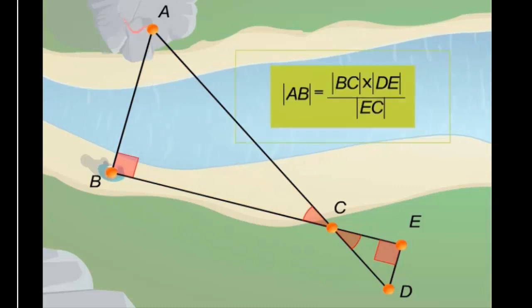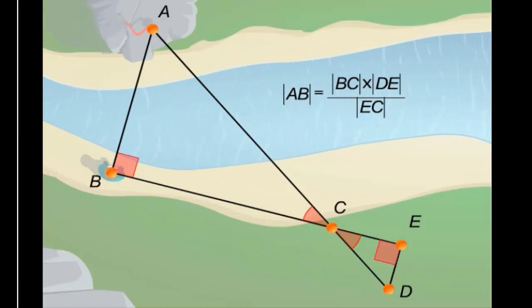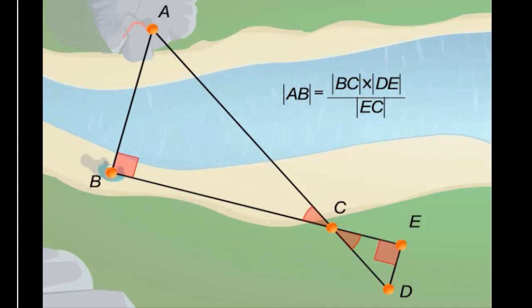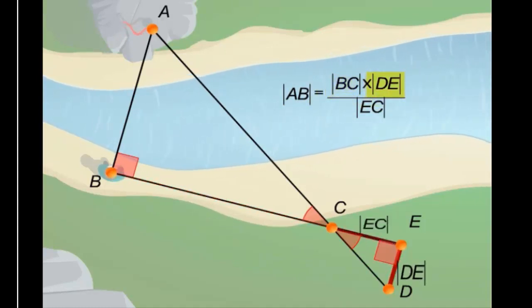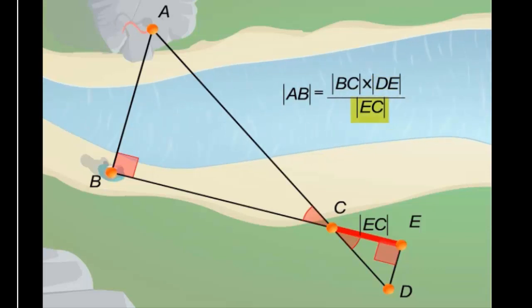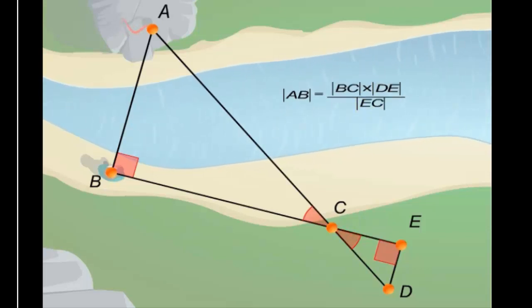Таким образом, AB равен BC, умноженное на DE, делённое на EC. Так как несложно измерить расстояние BC, DE и EC, вычислить расстояние через реку не составляет труда.